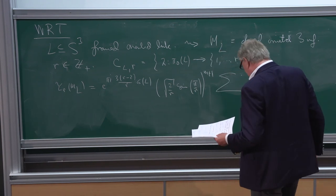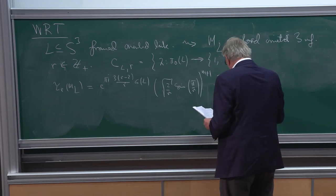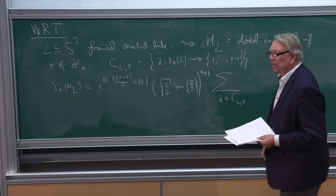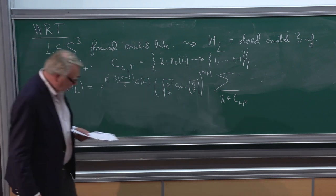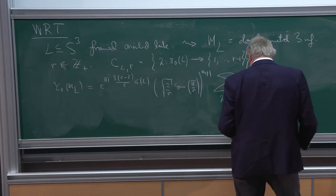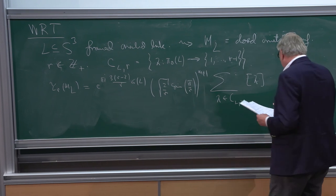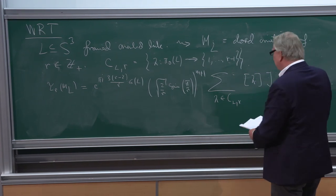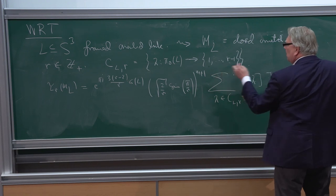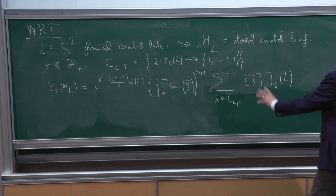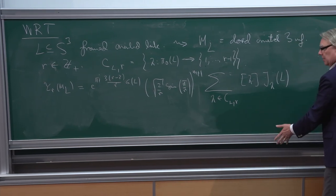This is a sinc — not sinh but sinc. So this is τ_r(M,L). I use exactly the notation of Turaev. This is summing over the label set, which is a finite set. There are finitely many components, m of them, and the label set is 1 up to r−1. You take the quantum dimension λ times the Jones polynomial colored by λ. I'll define all of this now.